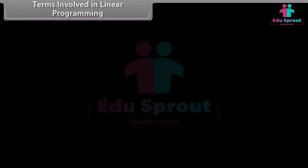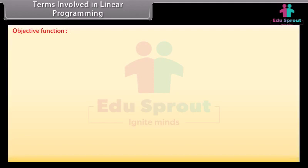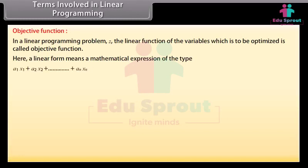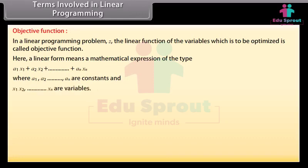Terms involved in linear programming. Objective function: In a linear programming problem, Z, the linear function of the variables which is to be optimized, is called the objective function. A linear form means a mathematical expression of the type A1X1 plus A2X2 plus so on till AnXn, where A1, A2 and so on until An are constants, and X1, X2 and so on till Xn are variables.